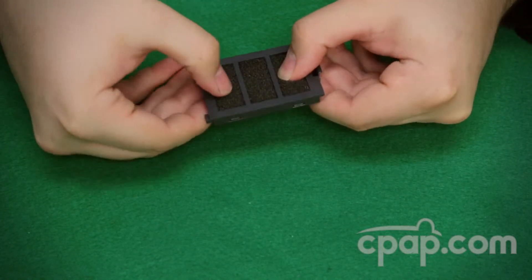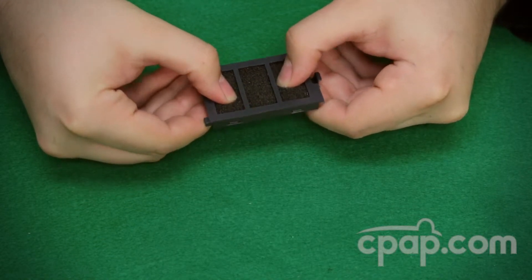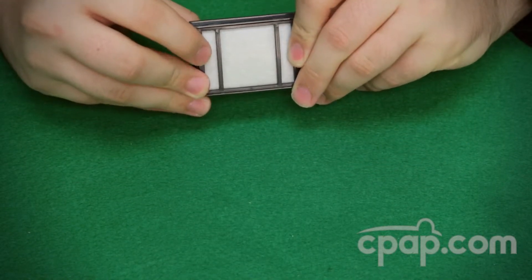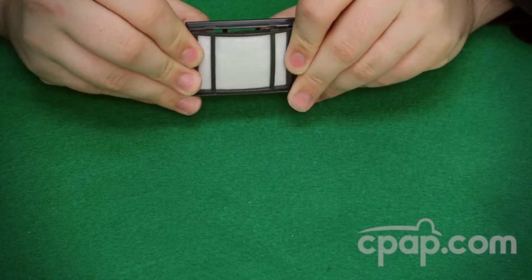Place the balls of your thumbs against the black foam filter. Then, while holding the opposite side secure, push with the balls of your thumbs to disassemble the cassette.